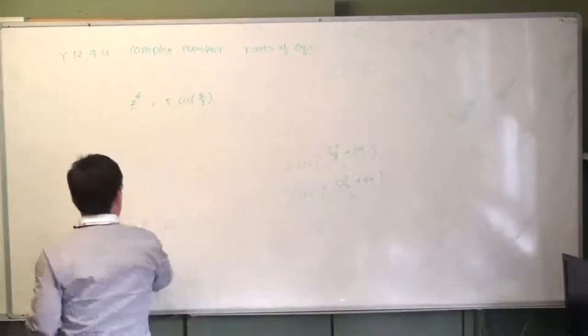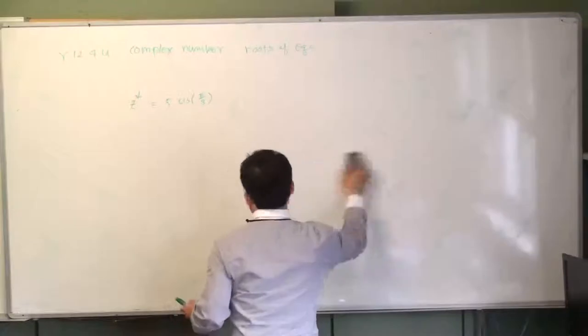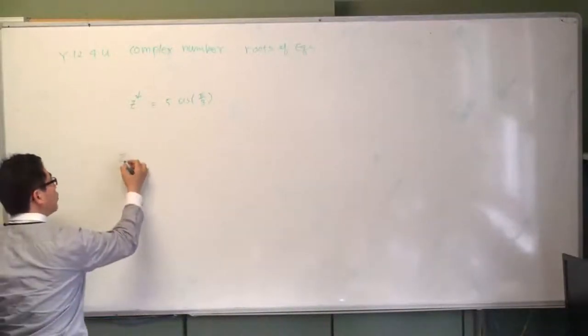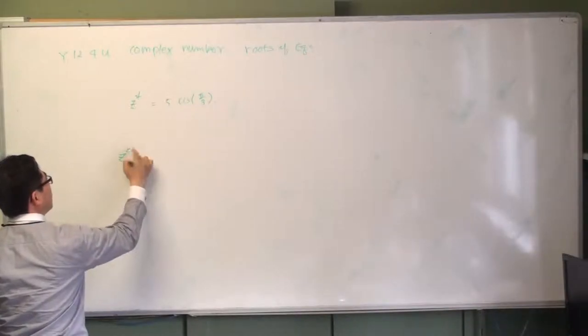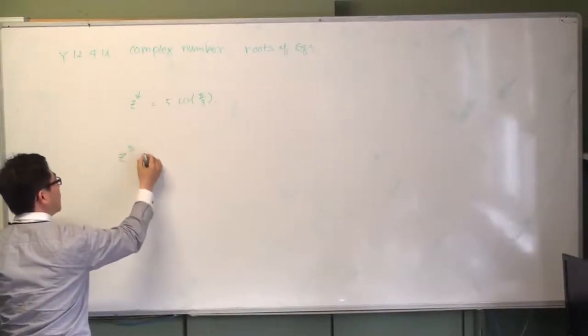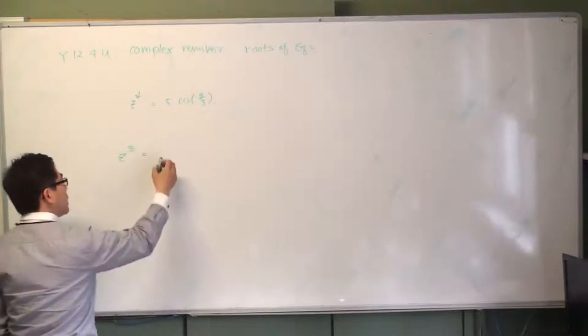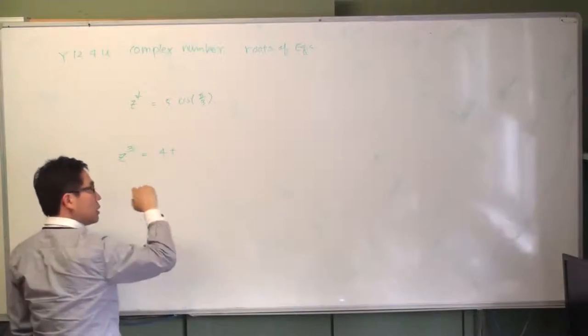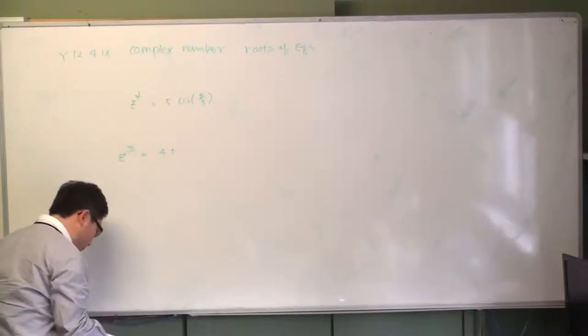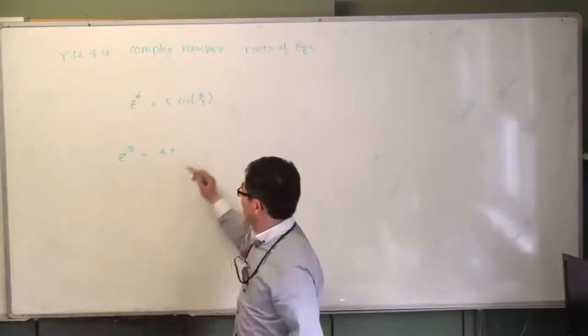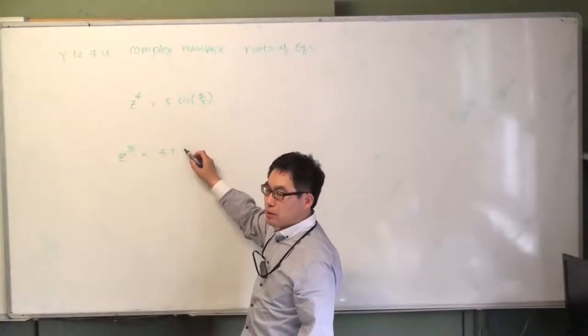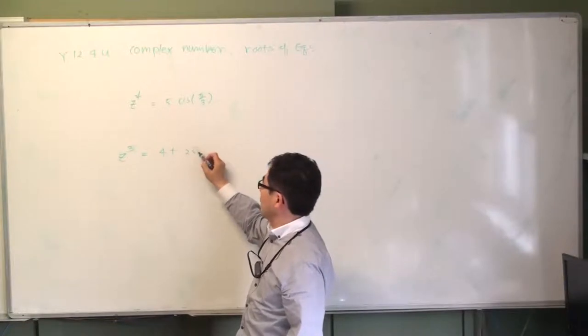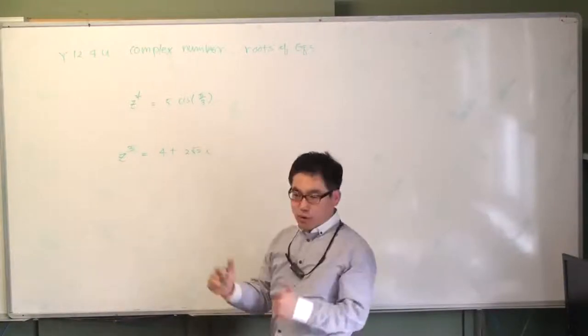Okay, we'll go a little bit further. Now, there are find roots of Z cubed equals 4 plus 2 root 3 i. Then here we go.